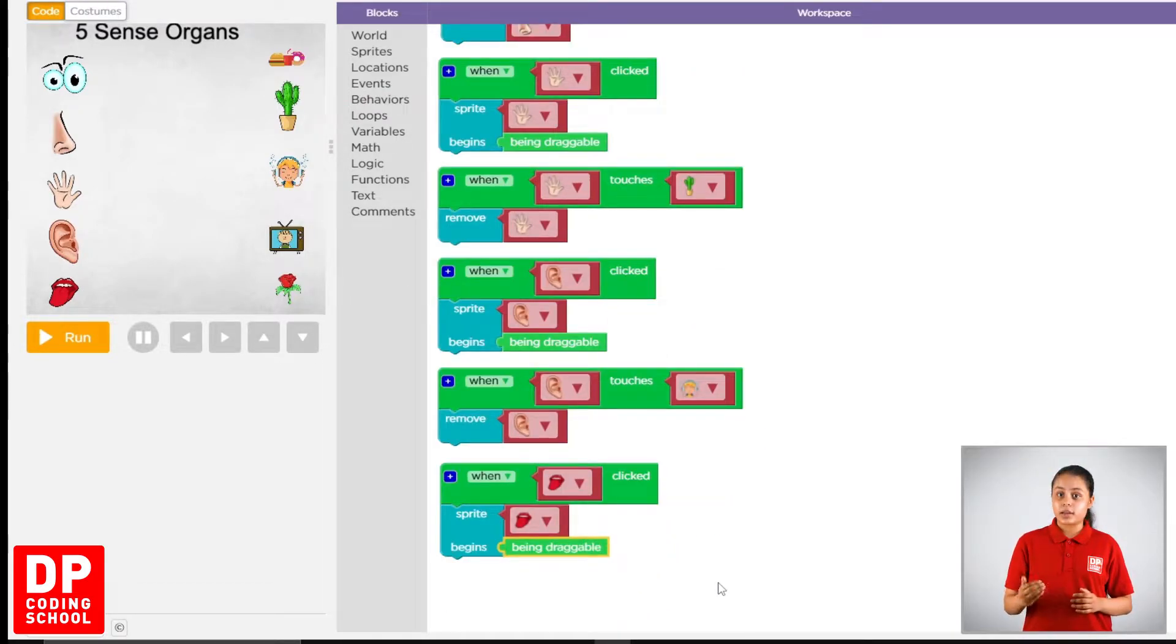Then, when you select the output than a sprite, you will drag. You can select the output than a sprite.